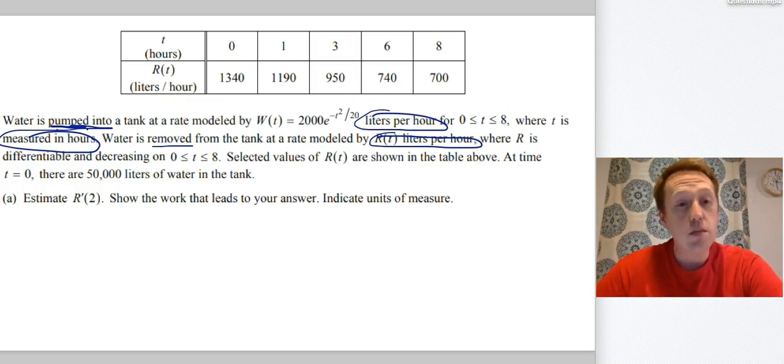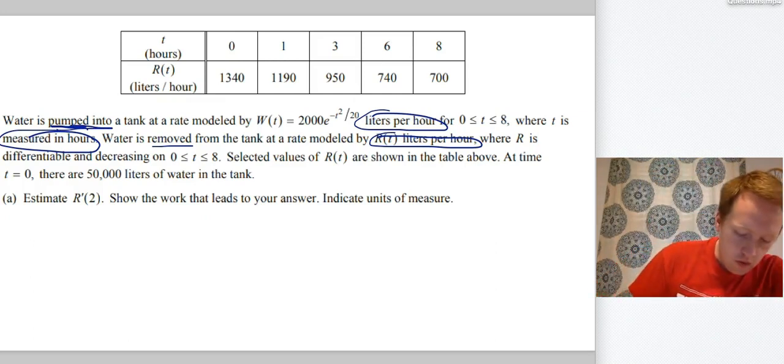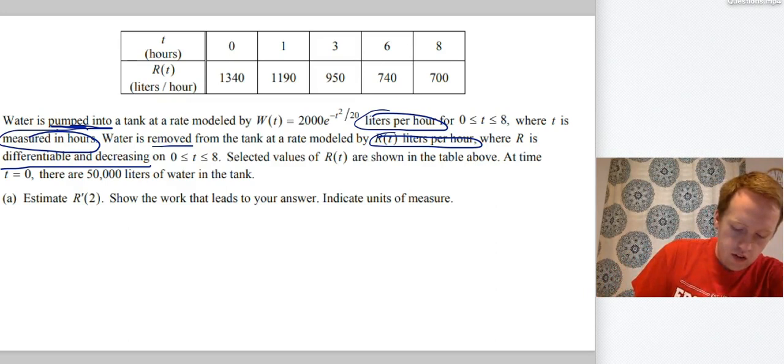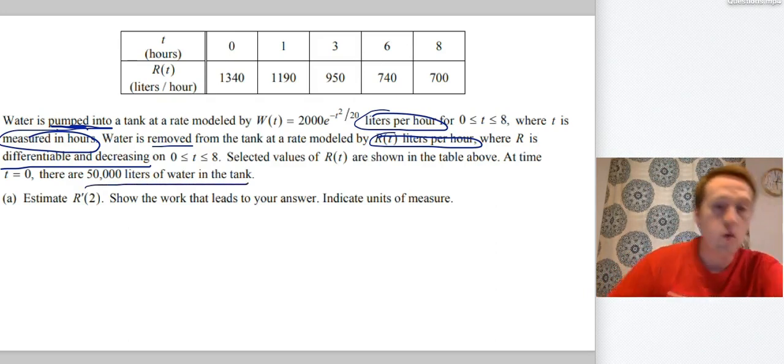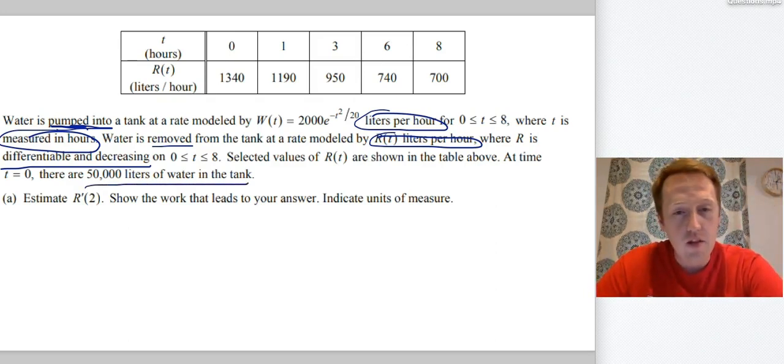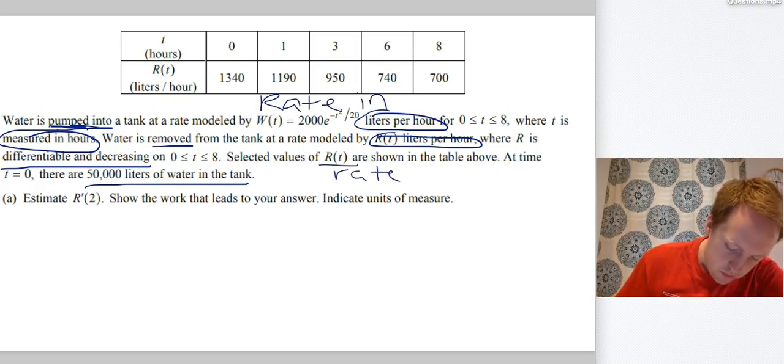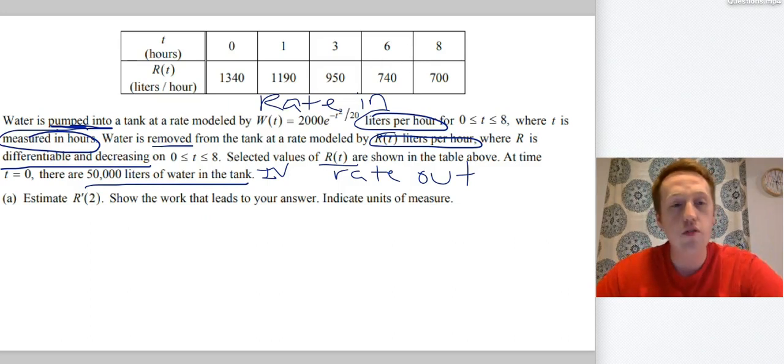W of T is pumped into the tank. R is differentiable and decreasing. Those are important things to know. Selected values of R of T are shown in the table above. At time T equals 0, there are 50,000 liters of water in the tank. So I see a lot of elements of a rate question in here. We've got water being pumped in. W of T is my rate in. R of T is the rate out. 50,000 is the initial value.